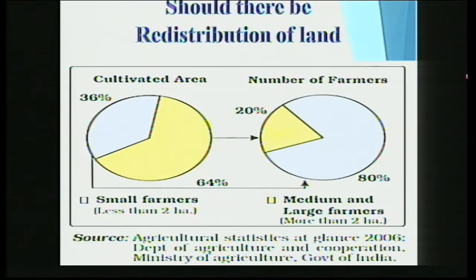Those dependent upon agriculture are large in number, but the return from the field is low and they are not able to invest to improve the quality of agriculture. One such barrier is the land-man ratio, or poor distribution of land. Rich persons who own large areas are not investing much in agriculture, and poor persons who own small plots are not able to improve productivity much.